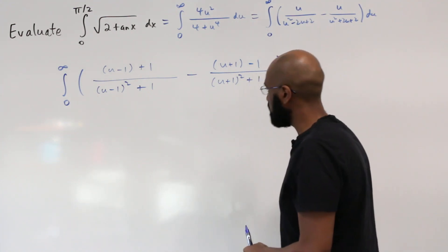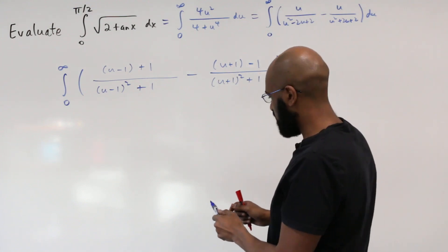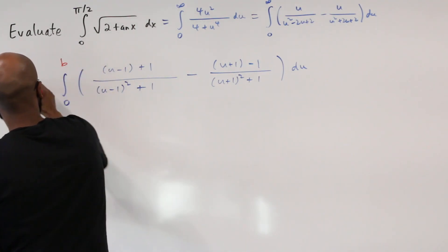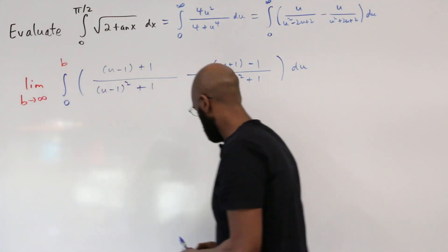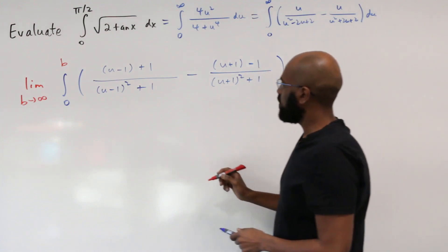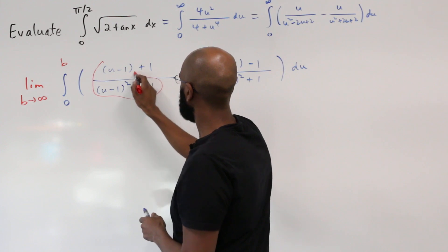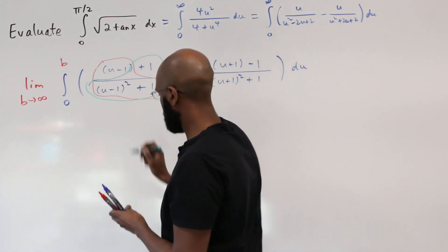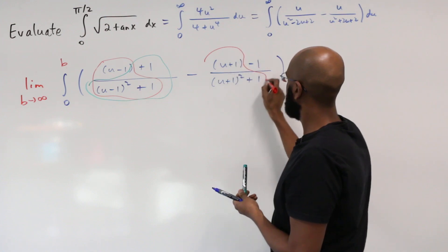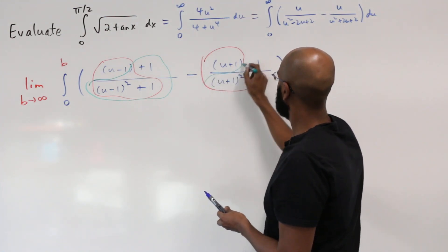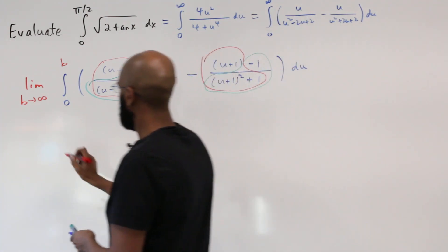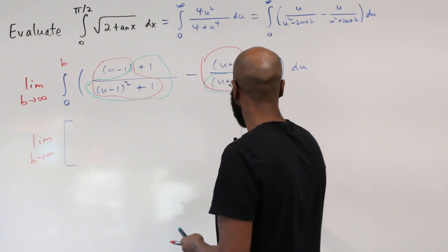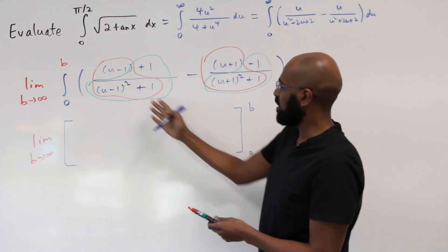We now address these integrals one by one. To be careful about convergence at infinity, we rewrite this as the integral from 0 to b and take the limit as b → ∞. We split each fraction into two parts, giving us four integrals total — two involving logarithm-type integrands and two involving arctan-type integrands.